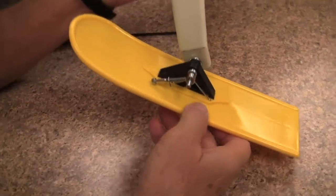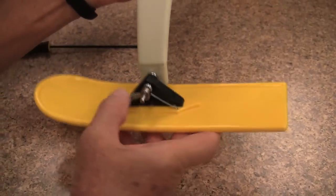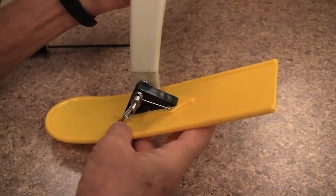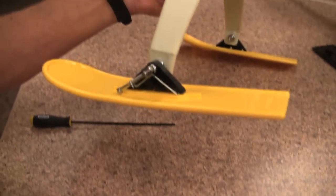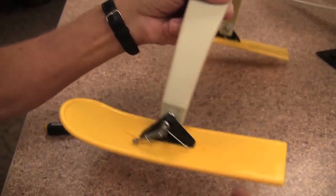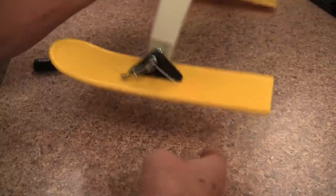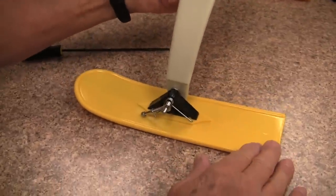Now we're going to set the angle we need. So we're going to just tweak it down about here. We get the angle we want. So we know when it lands, it's going to do this. And once we're satisfied with the angle, tighten up the bolt and you're done.